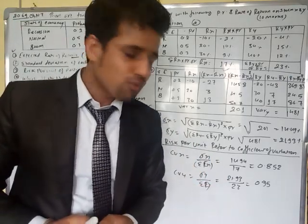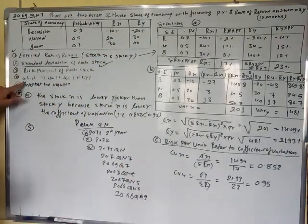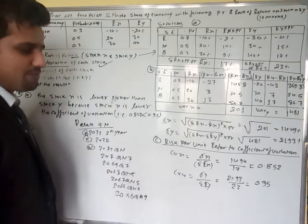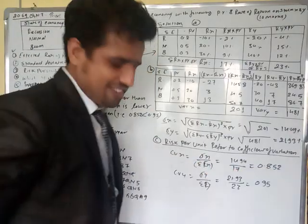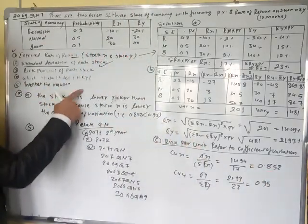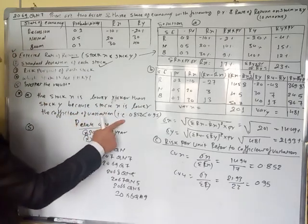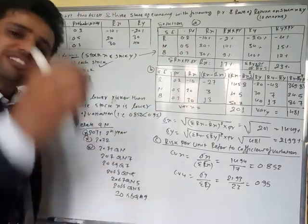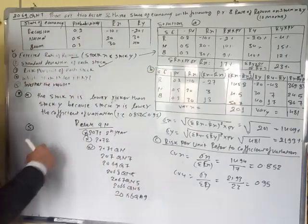Question (d) asks: which stock is less risky? After calculating the coefficient of variation, stock X has CV = 0.85 and stock Y has CV = 0.95. Since 0.85 < 0.95, stock X is lower risk than stock Y. Therefore, we suggest the investor invest in stock X.